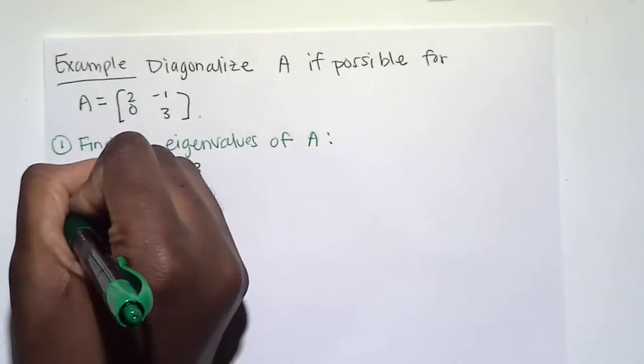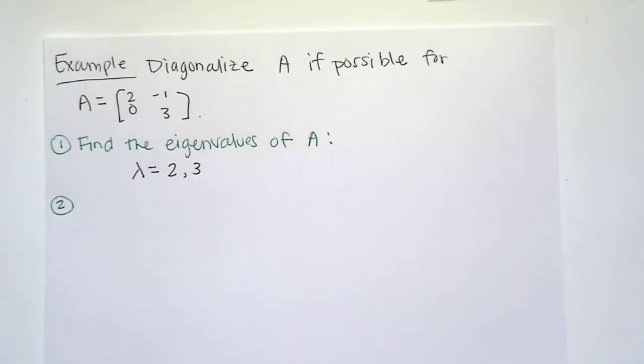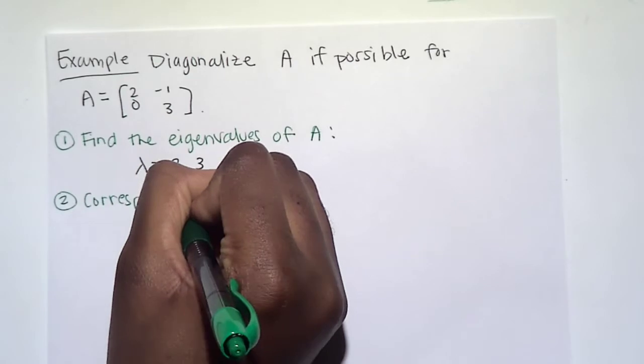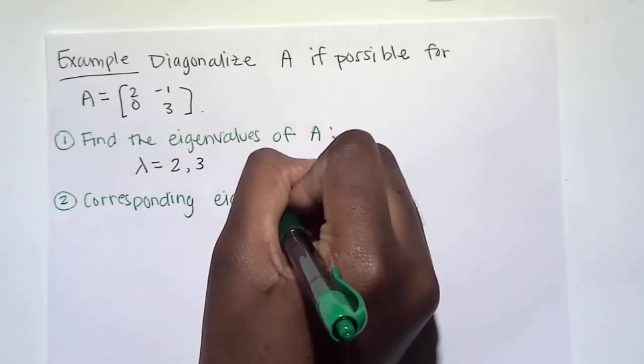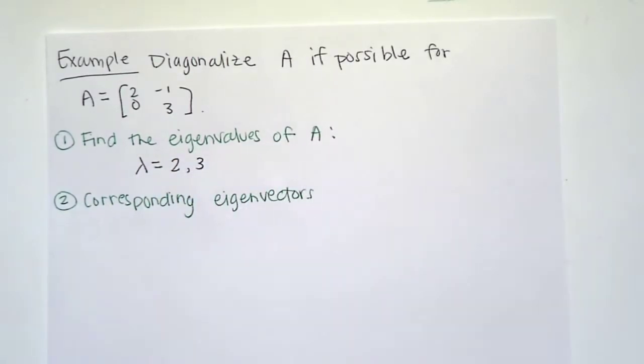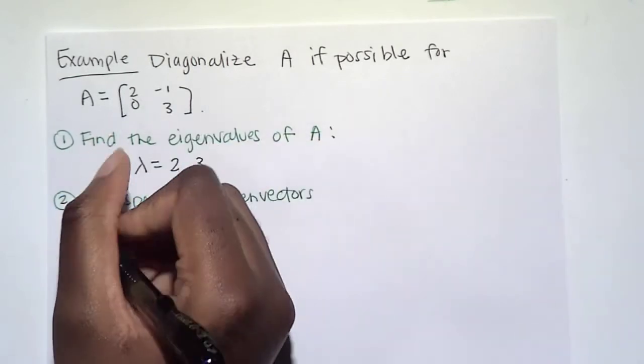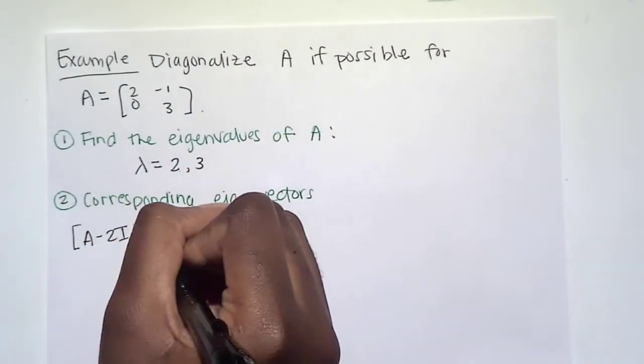Step two, once you've found the eigenvalues of A, we need to find the corresponding eigenvectors. So how do we do that? Well, we need to come up with our augmented matrix. So we need an augmented matrix for A, let's do the first one, lambda equals 2, so A minus 2I, set it equal to 0.